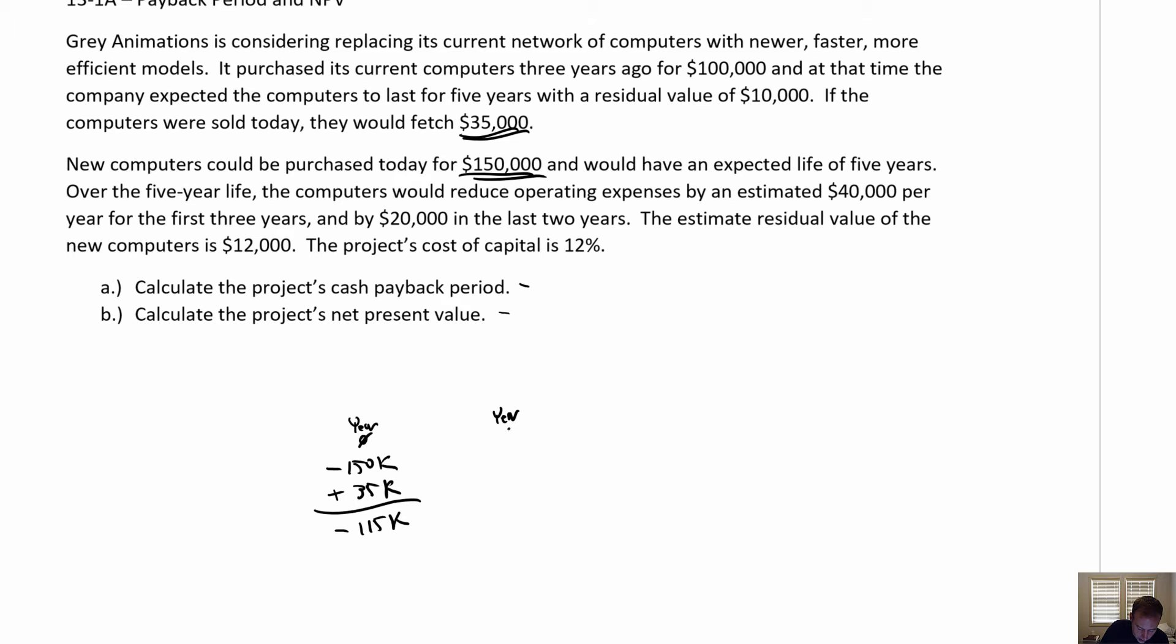Okay, so anyway, year one, we're plus $40,000 because we're saving $40,000 if we do this. Let's see, over the five-year life. So the first three years, so year two, plus $40,000, year three, plus $40,000, year four, not so great. Year four, we're saving $20,000, so plus $20,000, year five, plus $20,000, and it says the estimated residual value of the new computers is $12,000. That means after we're done with them, we can salvage them for $12,000. And so in the last year, it's plus $32,000.